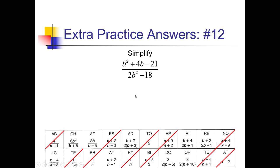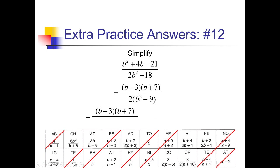For number 12, let me factor the numerator and denominator. In the numerator, I need factors of negative 21 that add up to 4 — negative 3 and positive 7 works, giving (b − 3)(b + 7). In the denominator, I can take out a 2 first, leaving 2(b² − 9). Now b² − 9 is a difference of squares: square root of b² is b, square root of 9 is 3, so 2(b + 3)(b − 3). The (b − 3)s cancel, leaving (b + 7) in the numerator and 2(b + 3) in the denominator. I see that right up here in the middle toward the top — cross that off.